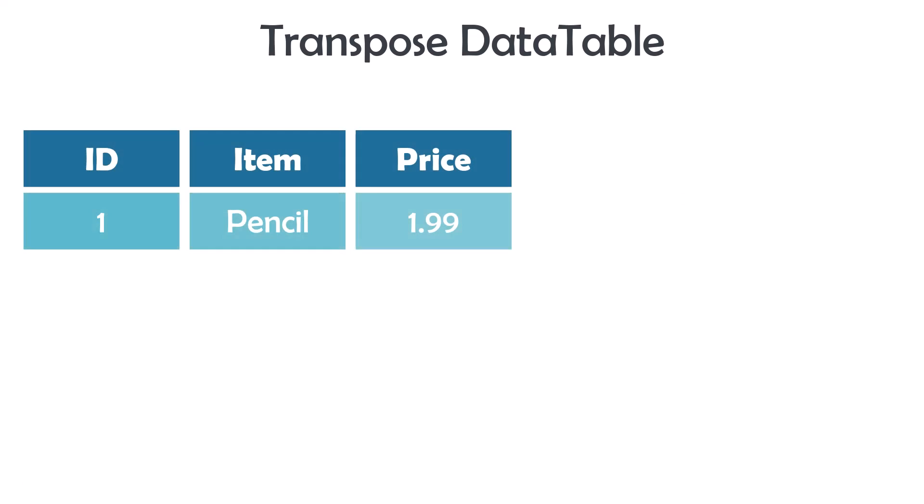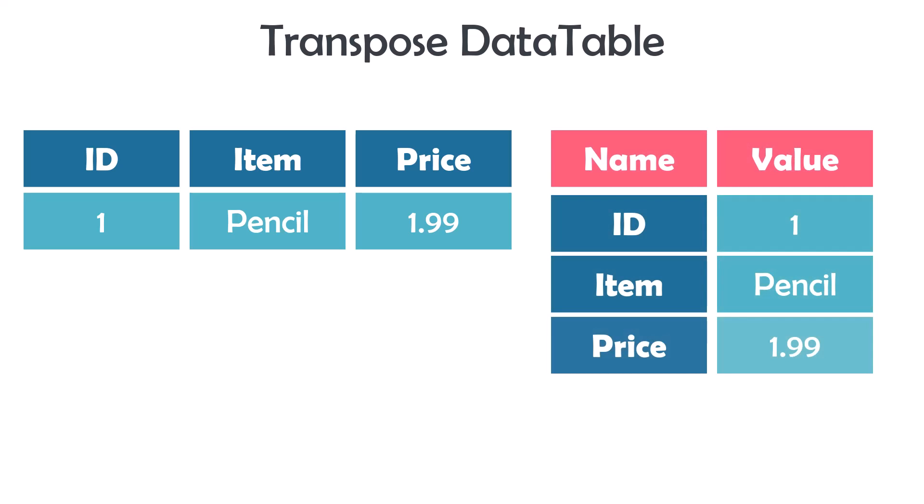Let's first understand what transposing a data table means. Assume I have a table which contains three columns and one row. For some reasons we need to have the same data but in another structure. Transpose is to convert the table to another table where the rows are converted to columns and the columns are converted to rows. Or we can also convert the rows and columns to rows but in another format. For example, the following table should look like this table after transposing.